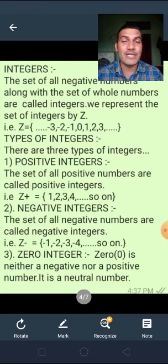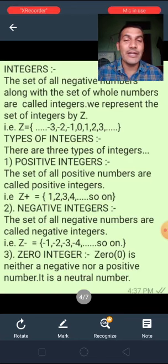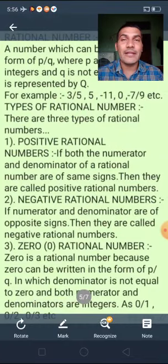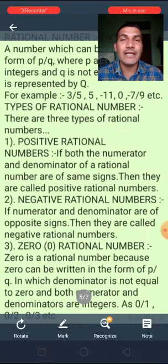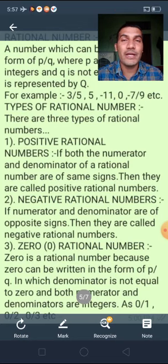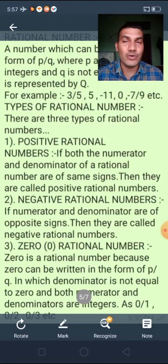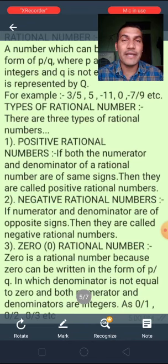Third is zero — zero is neither a negative nor a positive number; it is a neutral number. Next is rational numbers. A number which can be written in the form of P/Q, where P and Q are integers and Q is not equal to 0, is called a rational number. We represent the rational number by capital Q.